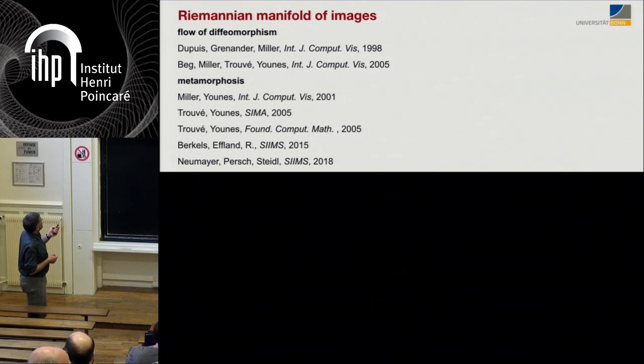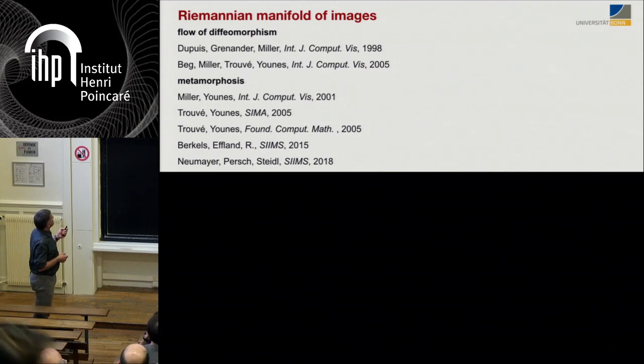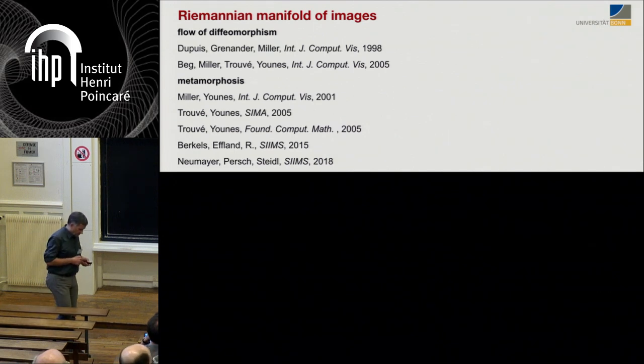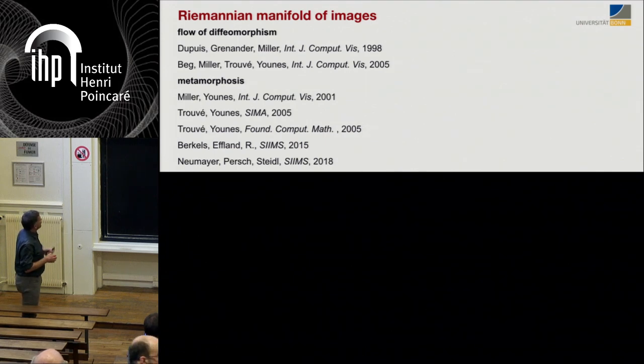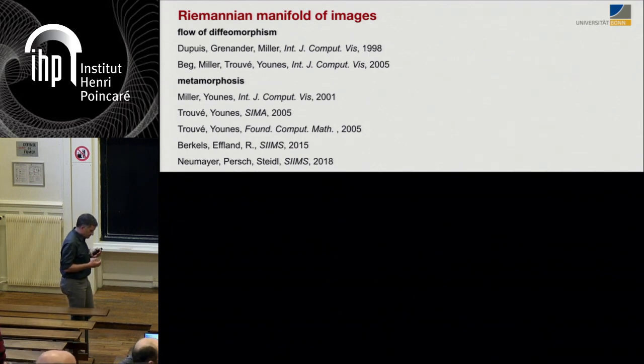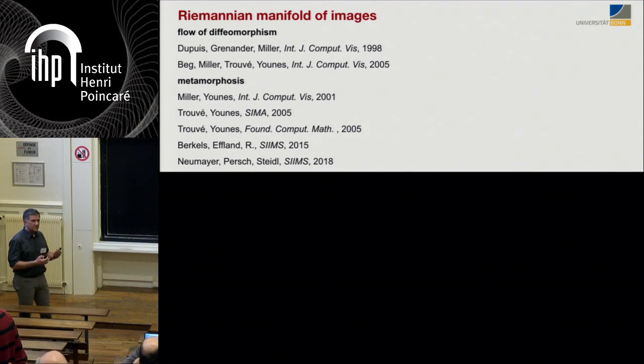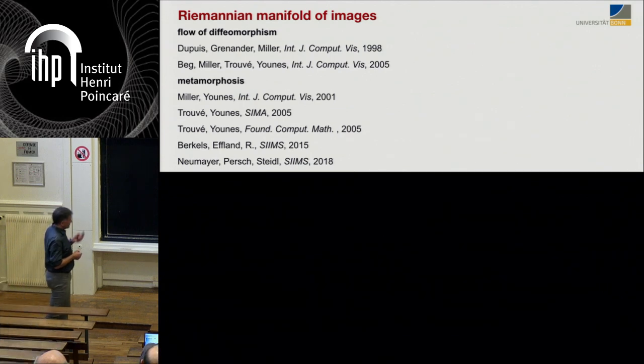Starting off from the flow of diffeomorphism context with the very early work in this direction, I just cited here two of the main references. Then the metamorphosis story started earlier this century. In particular, this theory paper in the SIAM Mathematical Analysis Journal by Alain Trouvé and Laurent Younes is important. There's also a paper by Gavi and her co-workers on manifolds of images.